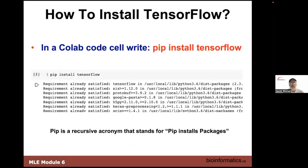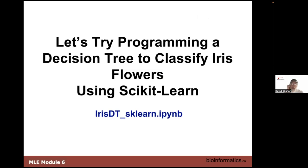How do you get TensorFlow to work? In Colab you type 'pip install tensorflow' — that's the command. PIP is a recursive acronym: PIP Installs Packages. It brings in those packages or modules, so you can do TensorFlow, which means you can also do things like sklearn.